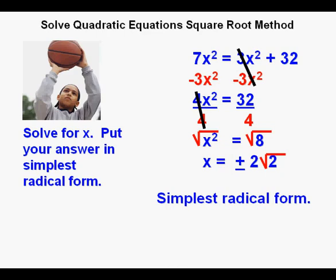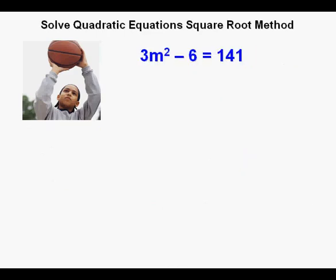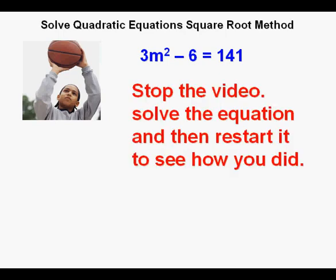Let's look at this problem. 3m squared minus 6 equals 141. Stop the video and solve this quadratic equation. After you've solved for m, restart the video to see if you got it right.